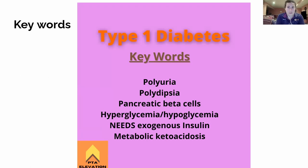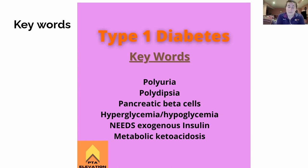A quick Google search had them realize she needed to go to the hospital. Pancreatic beta cells — those are the cells that produce insulin, and those are the ones we're really focusing on.